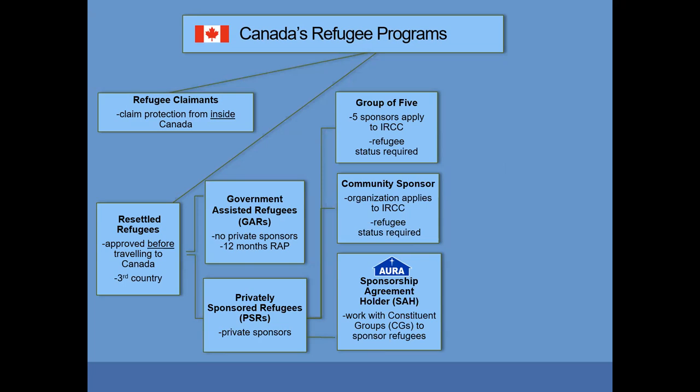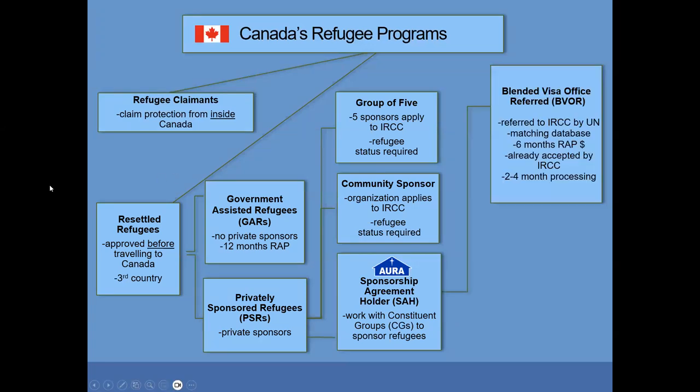We might have a group come to us that says they would like to sponsor anybody — they don't already have a person in mind. In that case, they might sponsor through what's called the BVOR program, the Blended Visa Office Referred program. This is where refugees are referred for resettlement to Canada, usually by the United Nations High Commissioner for Refugees, the UNHCR.